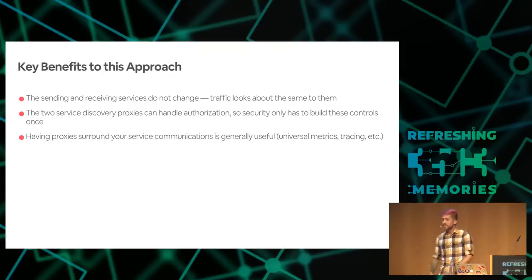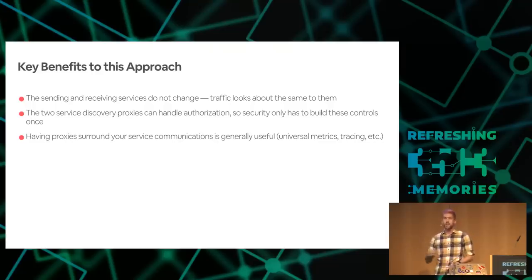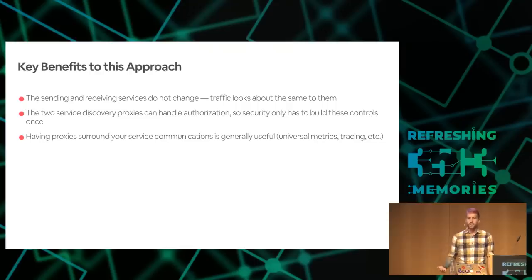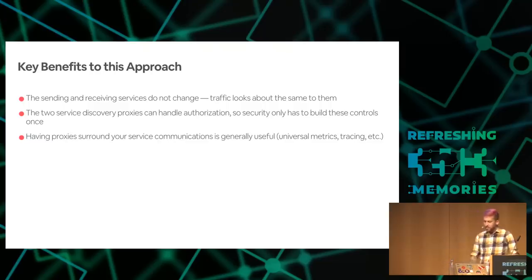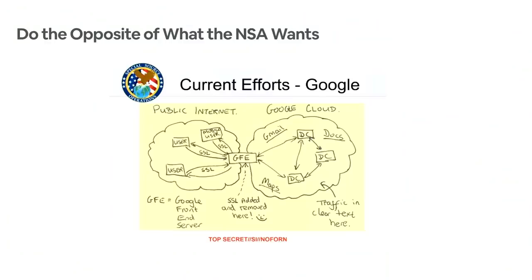Having proxies on either side of your service communications is also really helpful for non-security reasons: consistent metrics, better tracing, better load testing — we got all those for free, which helped us get support from other infrastructure teams who didn't have direct security goals. Basically what we've done with this proxy approach is the opposite of what the NSA wants. You may remember the leaked NSA presentation where they discovered with glee that inside Google's cloud network there was a lot of plain-text HTTP. We're just adding SSL and keeping it there.